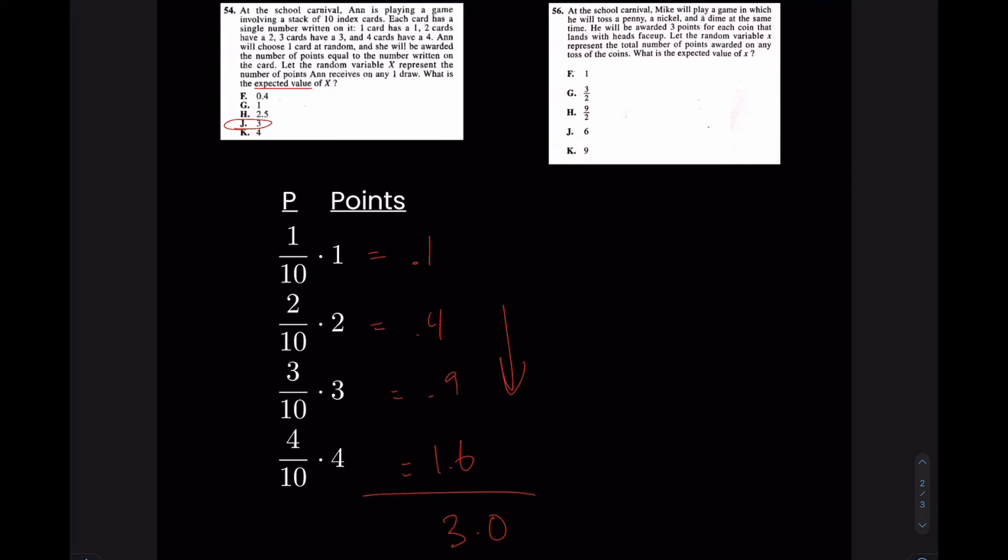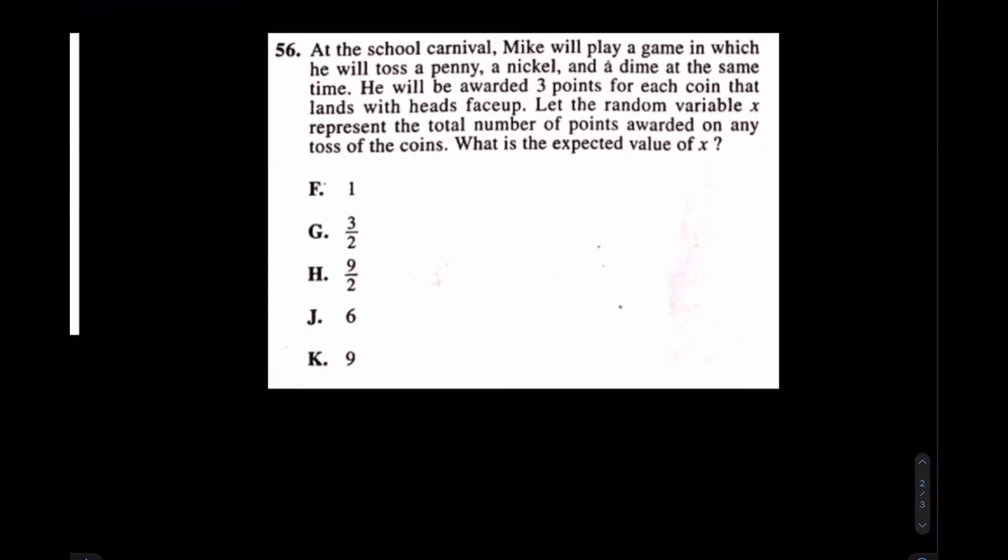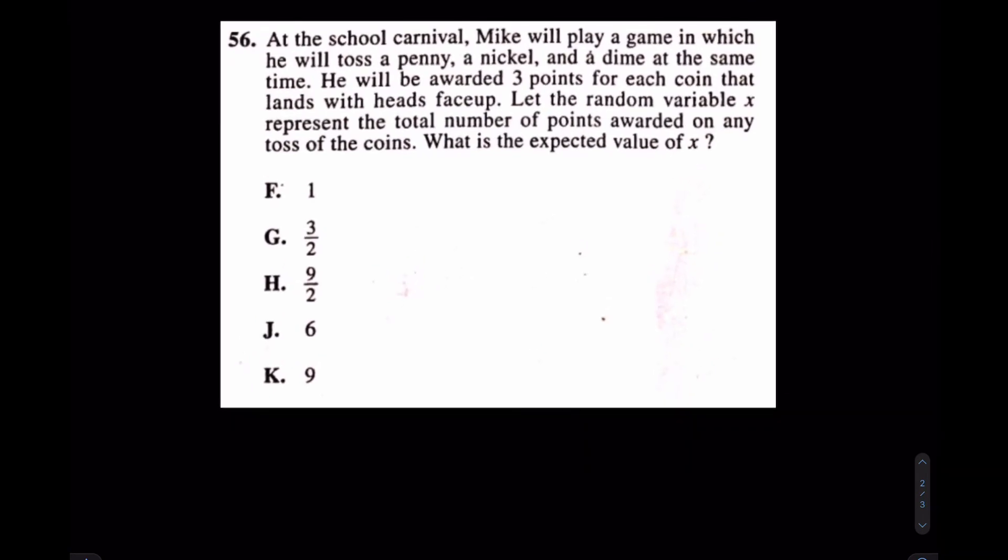And we're going to do another one over here on the right. This is number 56. Interesting. Well, wait a second. I thought this was going to go to penny, nickel, and dime and their values, but actually, they don't care that they're pennies, nickels, or dimes, because you're getting three points each, regardless of which coin it is. Again, we don't care about the value of the coin, because you're just getting three points regardless of the value of the coin. Let the random variable X represent the total number of points awarded on any toss of the coins. What is the expected value of X?